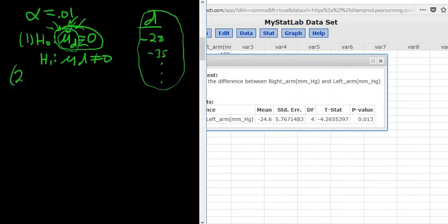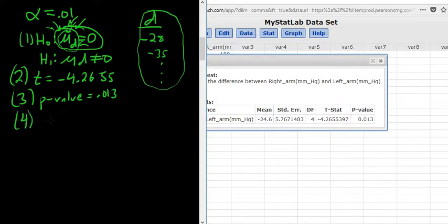So step two is our test statistic. That's T equals negative 4.2655, and then the p-value in this case is .013. So our p-value is barely bigger than alpha, right?